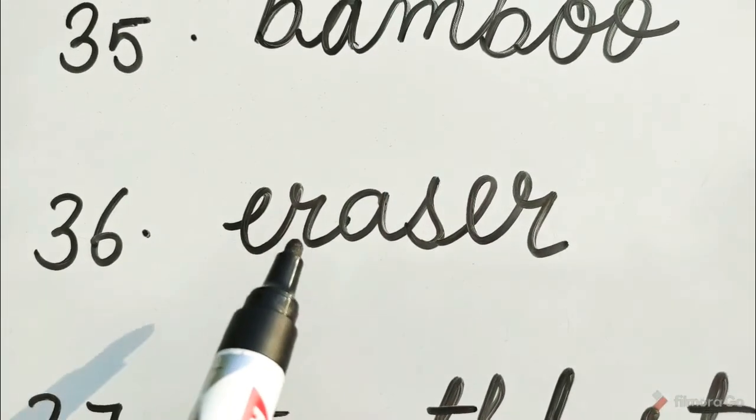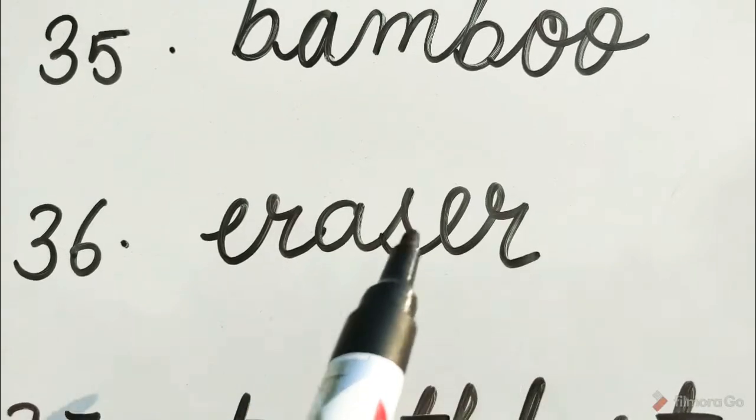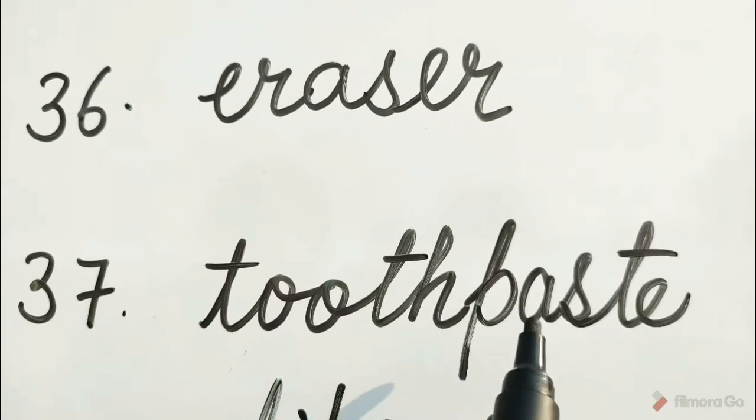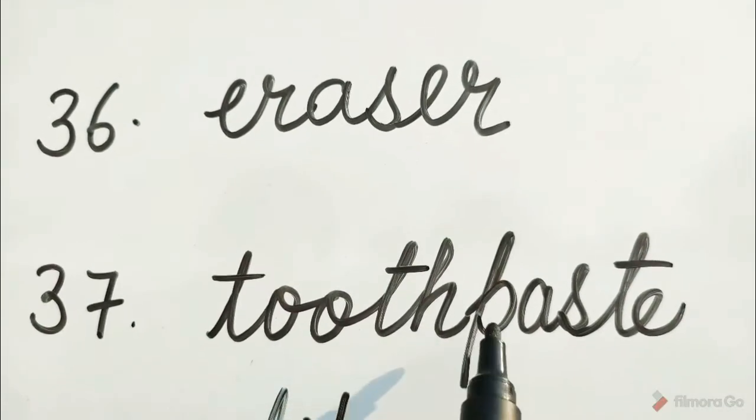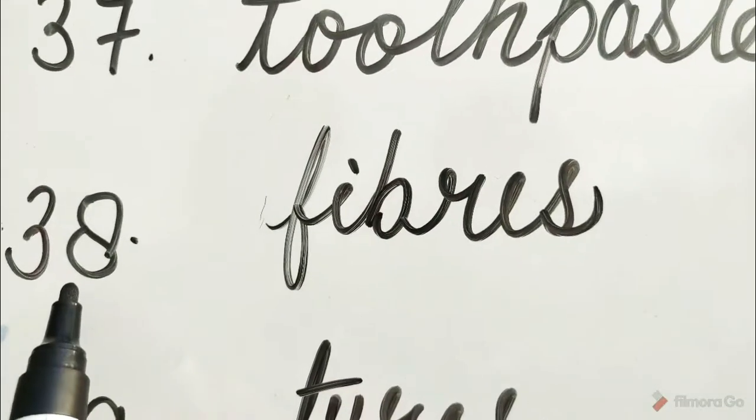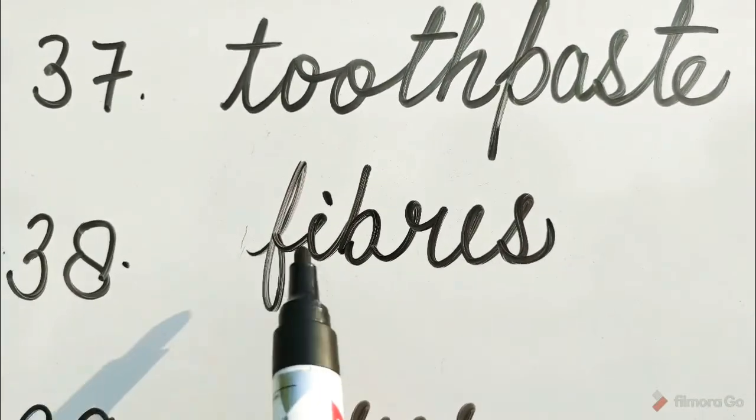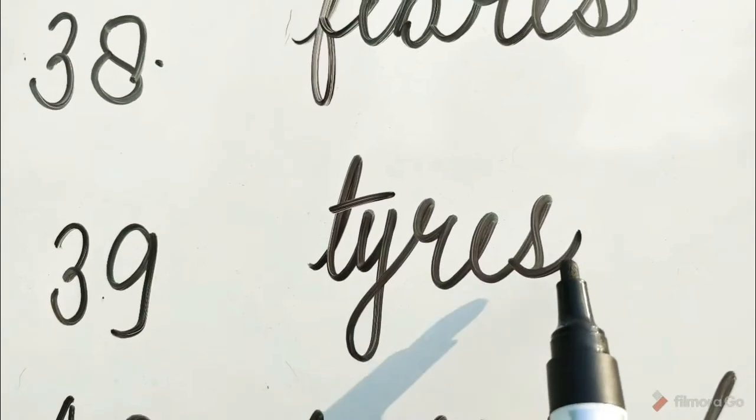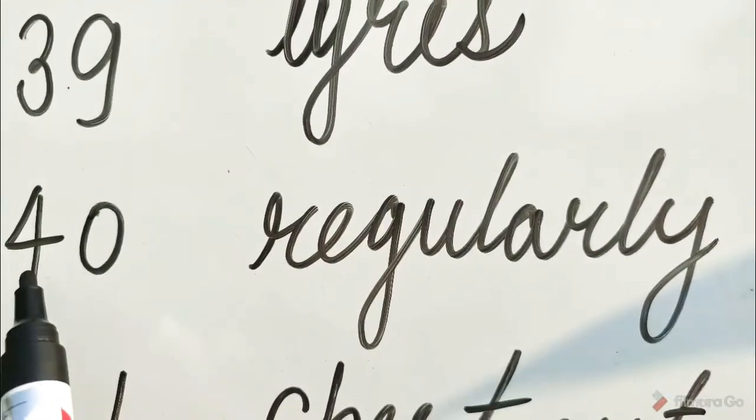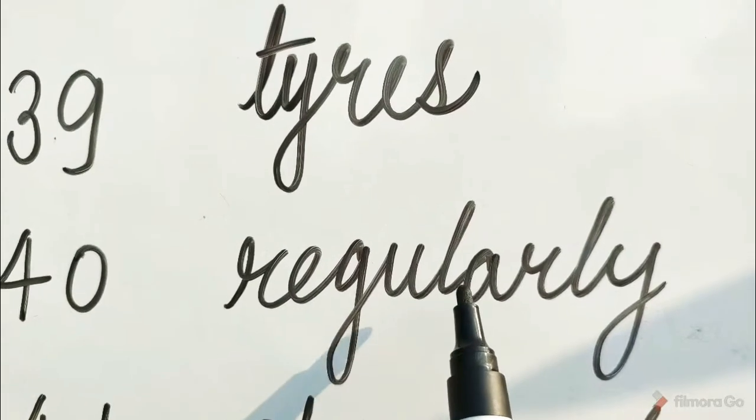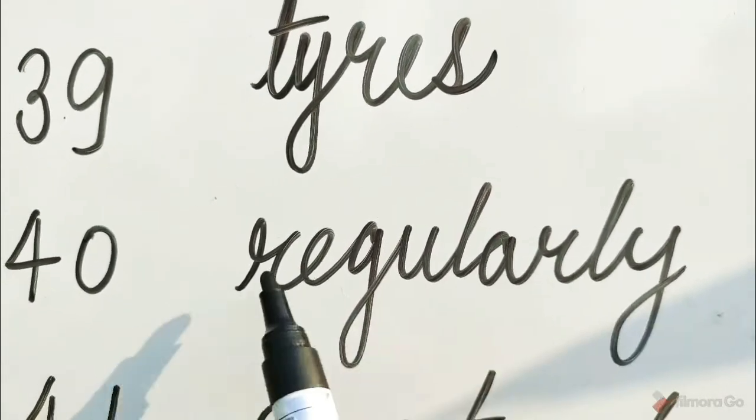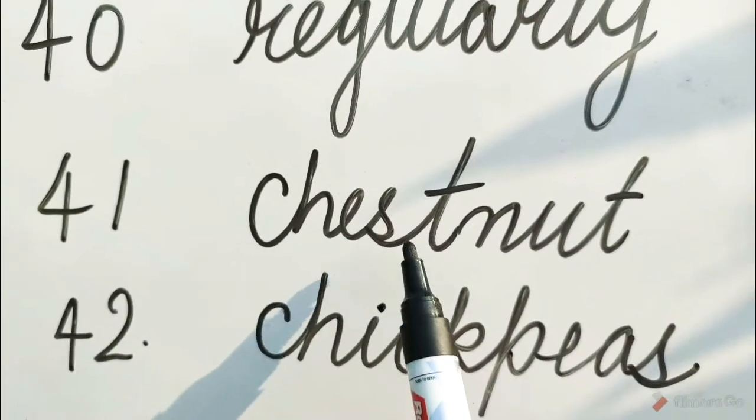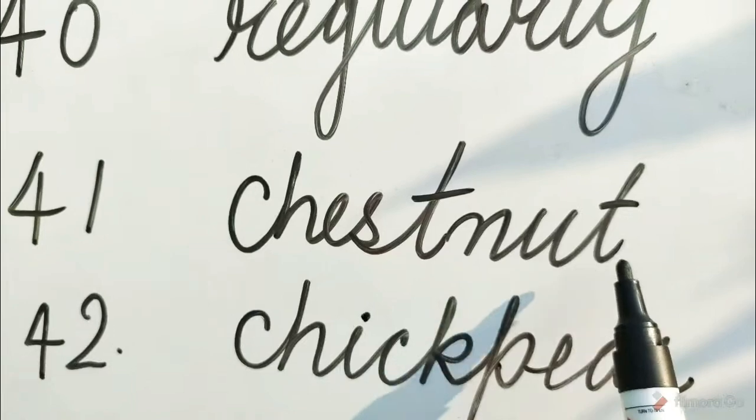Number 36: E-R-A-S-E-R, eraser. Number 37: T-O-O-T-H-P-A-S-T-E, toothpaste. Number 38: F-I-B-R-E-S, fibers. Number 39: T-Y-R-E-S, tires. Number 40: R-E-G-U-L-A-R-L-Y, regularly. Number 41: C-H-E-S-T-N-U-T, chestnut. Number 42: C-H-I-C-K-P-E-A-S, chickpeas.